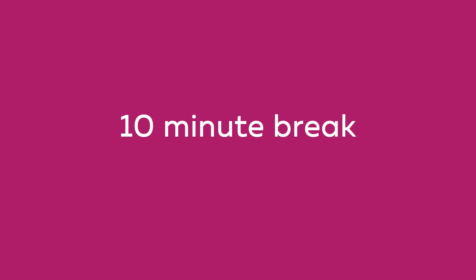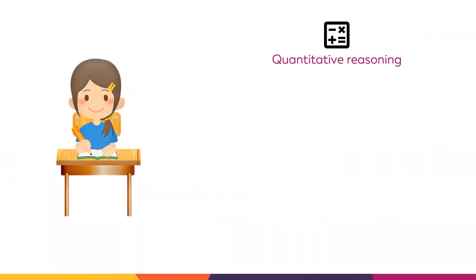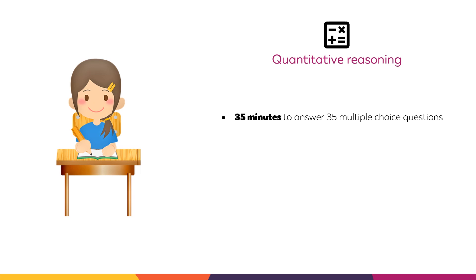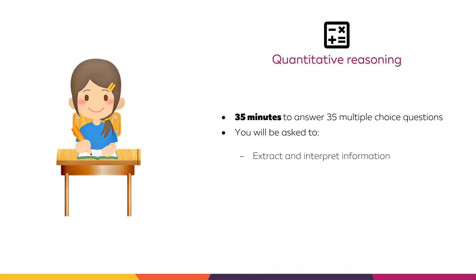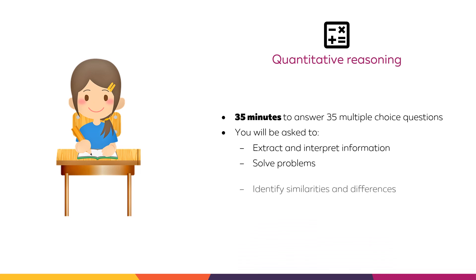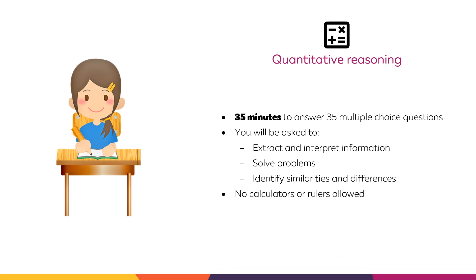The quantitative reasoning test assesses your reasoning ability in mathematics and science and requires no previous knowledge. It is 35 minutes long and you will have 35 multiple choice questions to answer. You will be asked to extract and interpret information, solve problems, and identify similarities and differences. You may not use calculators or rulers in this test.